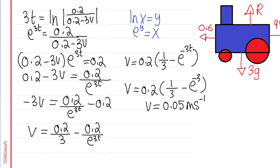The final part says state one modeling assumption used. One modeling assumption is that the truck is modeled as a particle. Another is that there is no friction — there is a resistive force, but there's no friction coefficient (no μR). Those are two possible modeling assumptions.